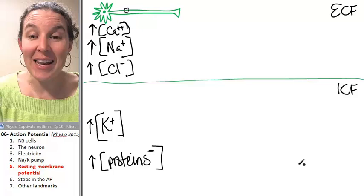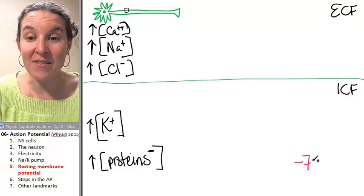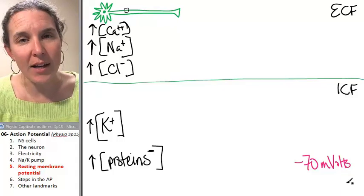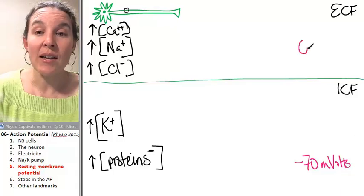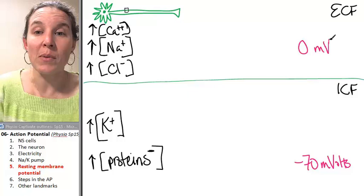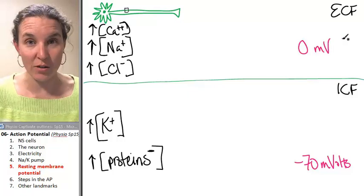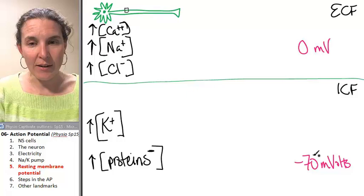Inside there is a net charge of negative 70 millivolts when compared to the outside. So outside there's a charge of zero millivolts. That's the action. I mean, that's the membrane potential.